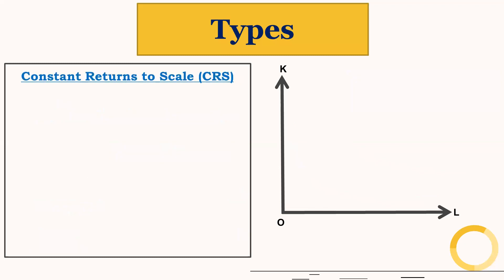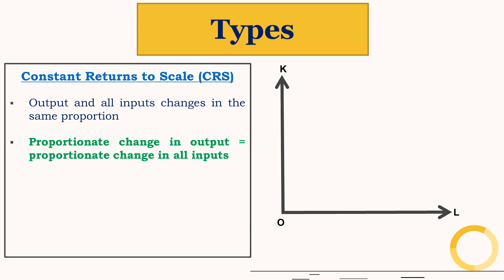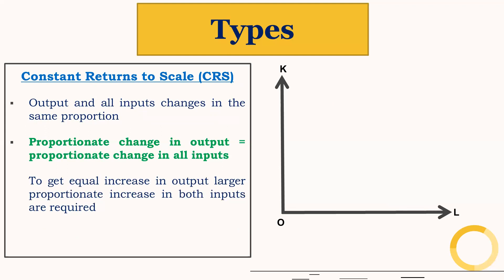Last is constant returns to scale. Here output and all inputs change in the same proportion. So proportionate change in output is equal to proportionate change in all inputs. To get an equal increase in output, an equal proportionate increase in both inputs is required, and therefore there is no change in the distance between isoquants.